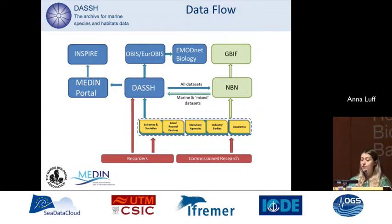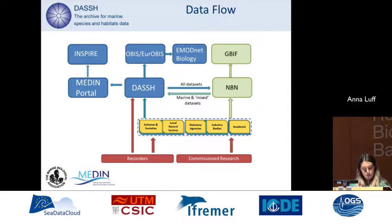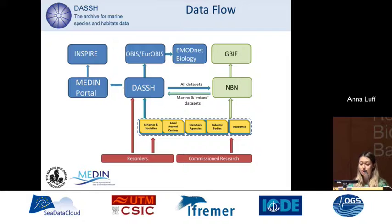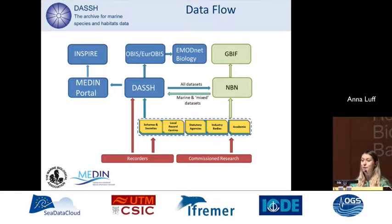Here's the current view of our data flow. Our data is acquired from a wide range of multidisciplinary sources, from citizen science to statutory agencies, and is sent either directly to DASH or to the National Biodiversity Network. Any marine species records sent to the NBN are sent through to DASH, and all data sent to DASH is disseminated through to the NBN, which is then made available through to GBIF.